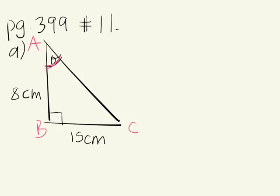Given this information, what part of the triangle do you need to find? We need to figure out this angle — this is what's unknown. They're asking us to find angle A. We want to know what angle A is equal to.